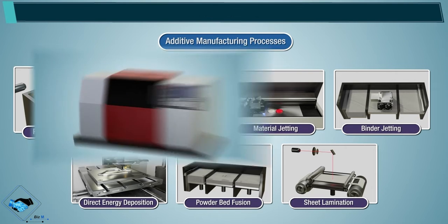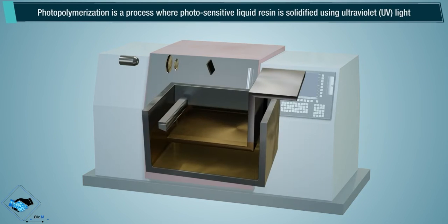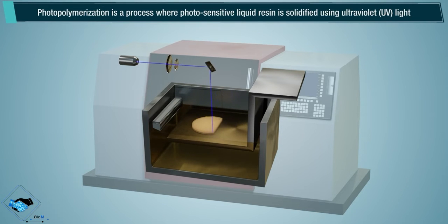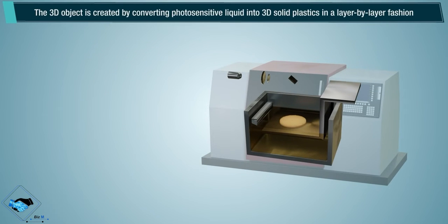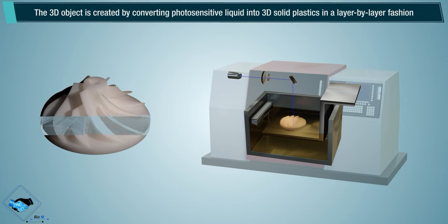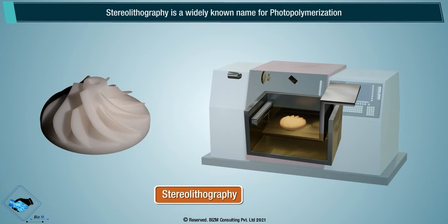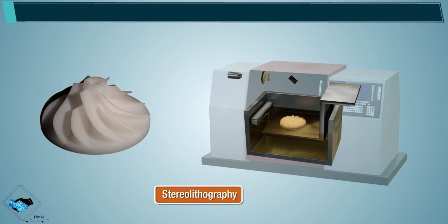Photopolymerization is a process where photosensitive liquid resin is solidified using ultraviolet UV light. The 3D object is created by converting photosensitive liquid into 3D solid plastics in a layer-by-layer fashion. Stereolithography is a widely known name for photopolymerization.